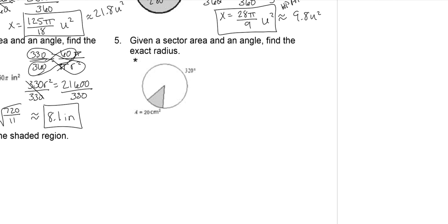Given a sector area and an angle, find the exact radius. So we have the outside, but we need to do the little one. So 360 minus 320 means that this is 40 degrees. So part over whole, 40 degrees over all of it, which is 360.